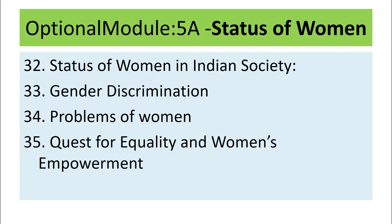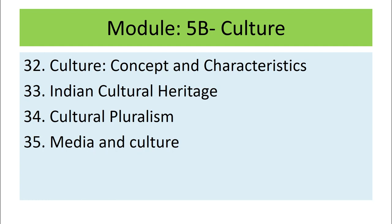The fifth module has two optional modules: namely, Status of Women (5A) and Culture (5B). The optional modules are designed to give the learner flexibility and freedom to choose a topic of their choice, and to provide a deeper understanding into a specific area. Optional module 5A on Status of Women has four lessons, and optional module 5B on Culture also has four lessons. The learner has to choose any one of these modules.